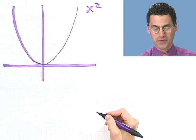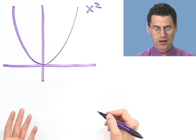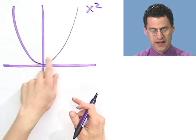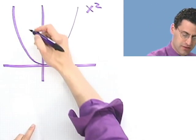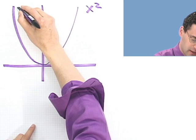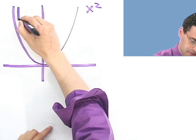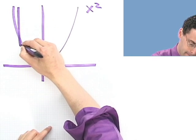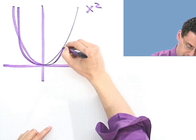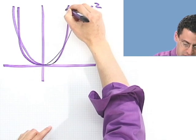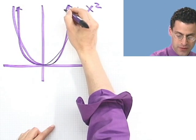What would y equals x to the fourth look like? Well, it would be a similar kind of thing — it would come down and go up. But what turns out is it starts in a little bit further and then drops. Still very smooth, but a slightly different shape. That's x to the fourth.